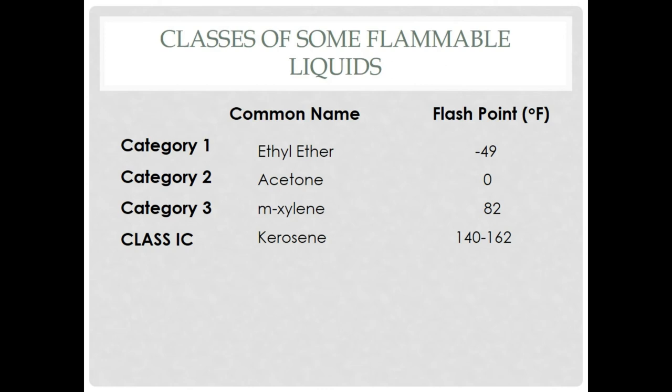For example: Category 1 has a flash point of minus 49°C. Category 2 — Acetone — has a flash point of 0°C, meaning acetone vapors will evaporate at zero degrees. Category 3 — M-Xylene — has a flash point of 82°F. Class 1C — Kerosene oil — has a flash point of 140 to 162°F.